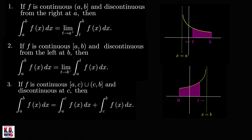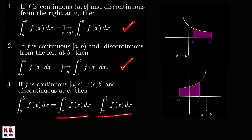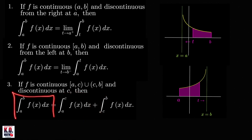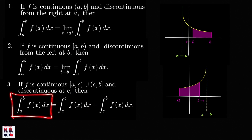For the last case, if the integrand has a discontinuity at a point c which is between the limits of integration a and b, then to evaluate this integral we split it into two integrals using the point of discontinuity. If both of these integrals are finite, we conclude that the improper integral is convergent. But if one of them is not finite, we conclude that the improper integral is divergent.